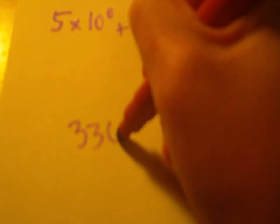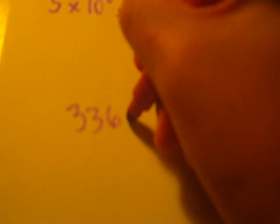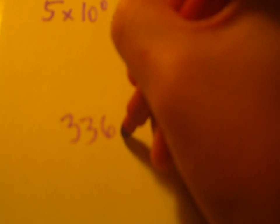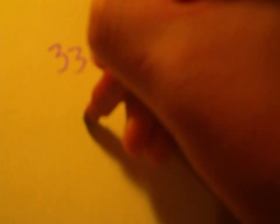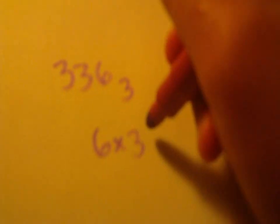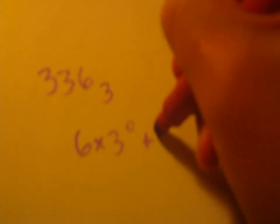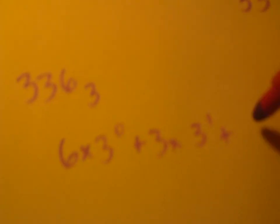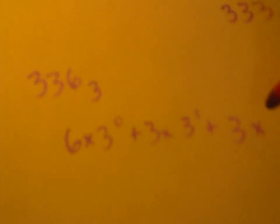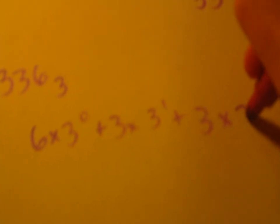So, let's take the number 336 in base 3, for example. Then you want to transfer it to base 10. So, all you have to do is do 6 times 3 to the 0th plus 3 times 3 to the 1st plus 3 times 3 squared.